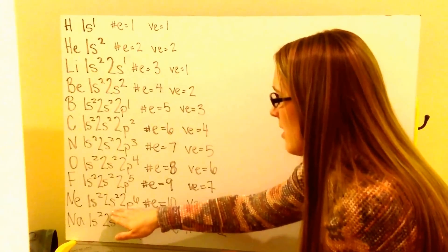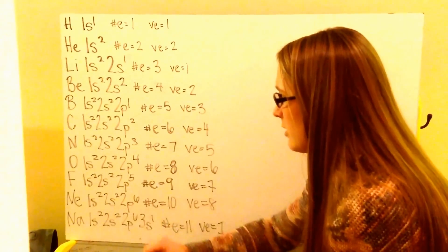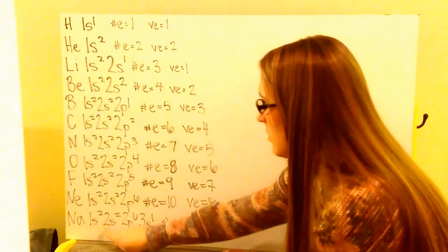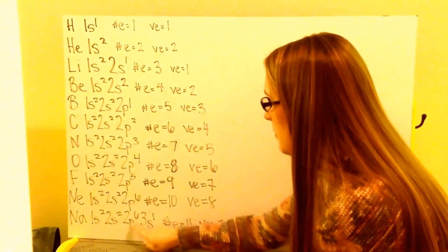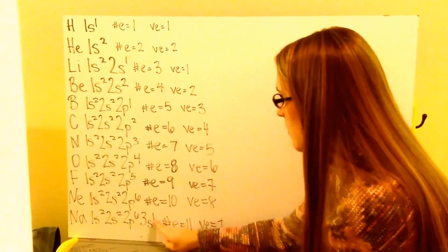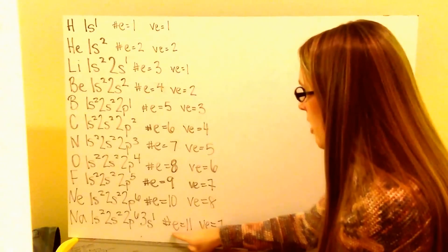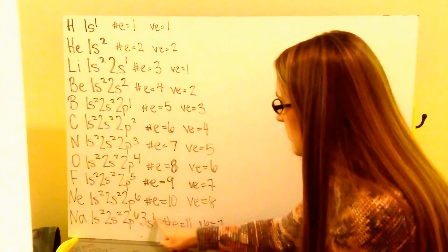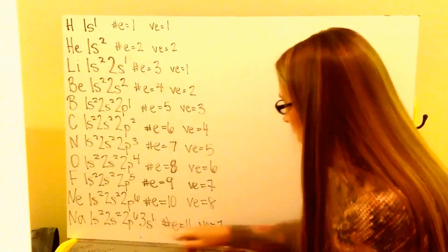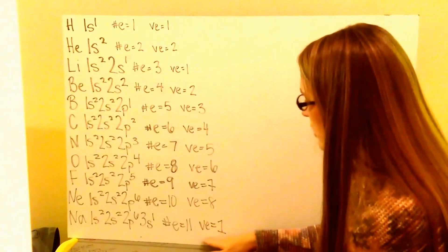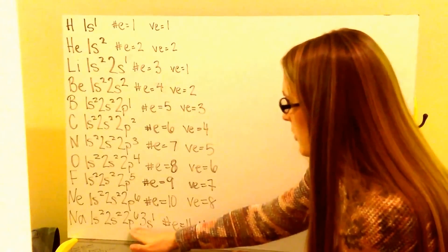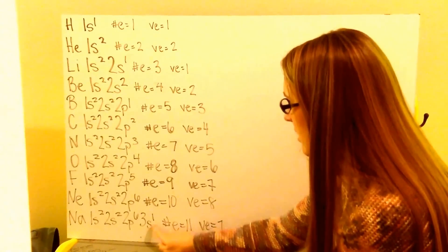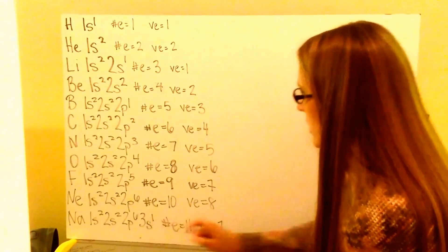Sodium is 1s2, 2s2, 2p6, 3s1 — there are 11 electrons: 2 plus 2 plus 6 plus 1 makes 11. And there is one valence electron, as 3 is my highest energy level in the S and there is one electron there.